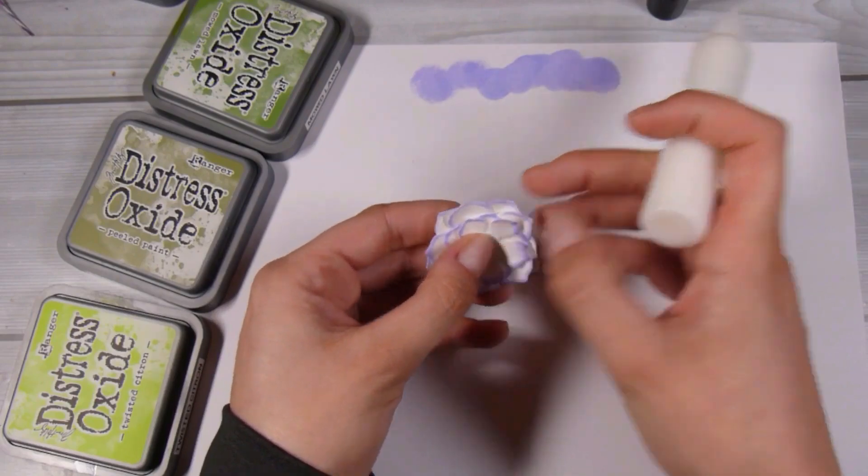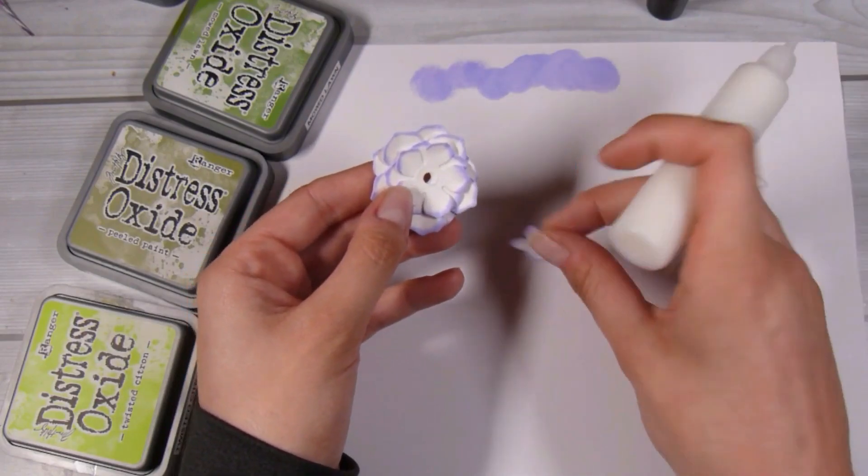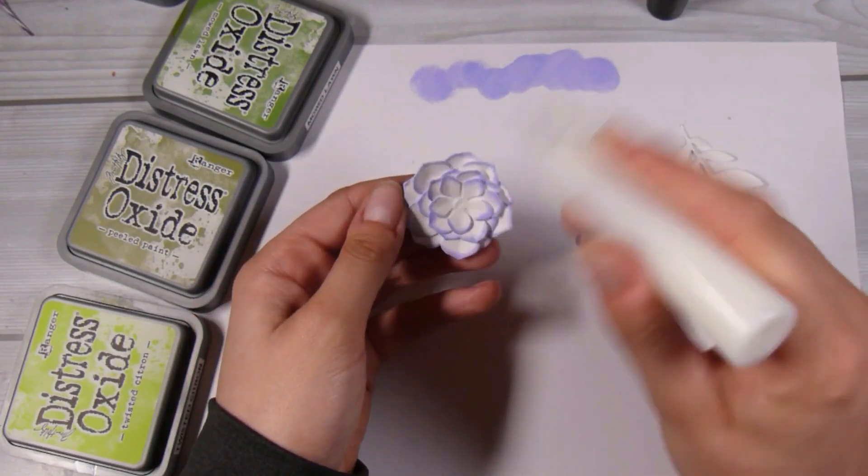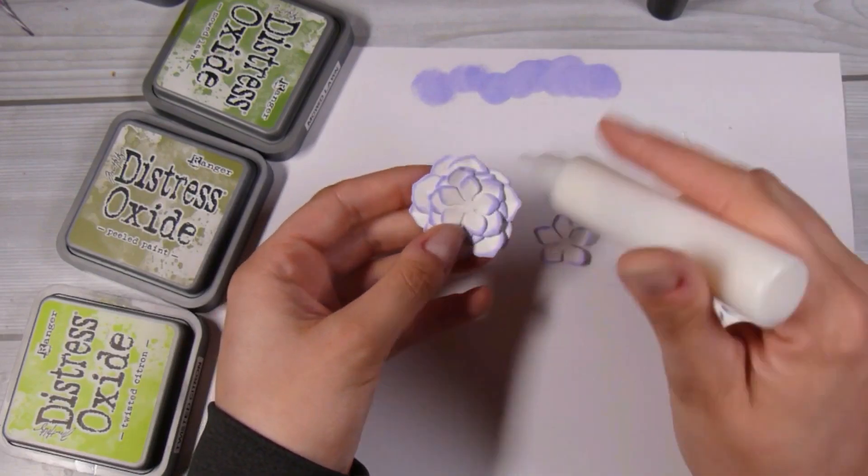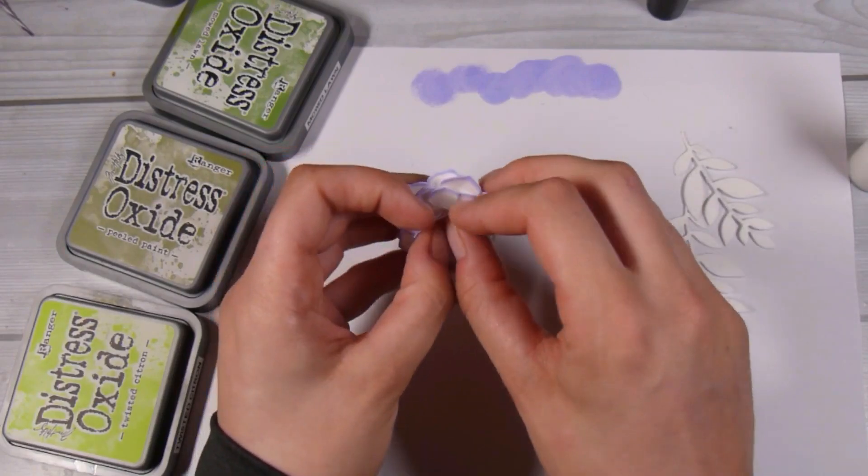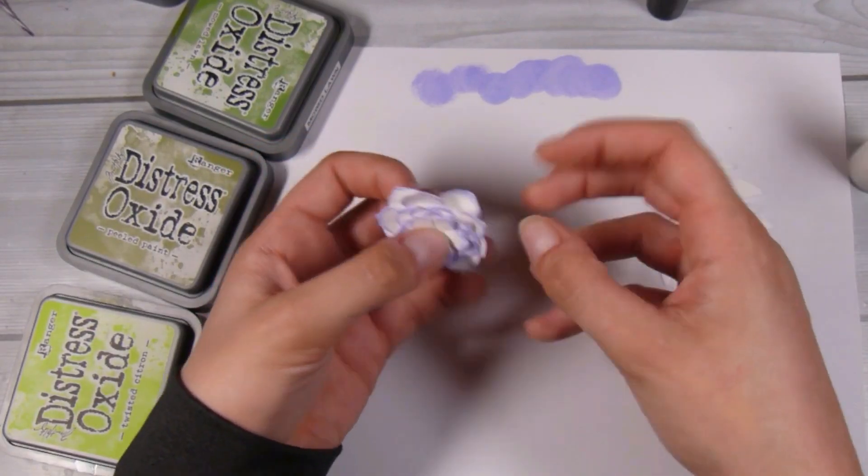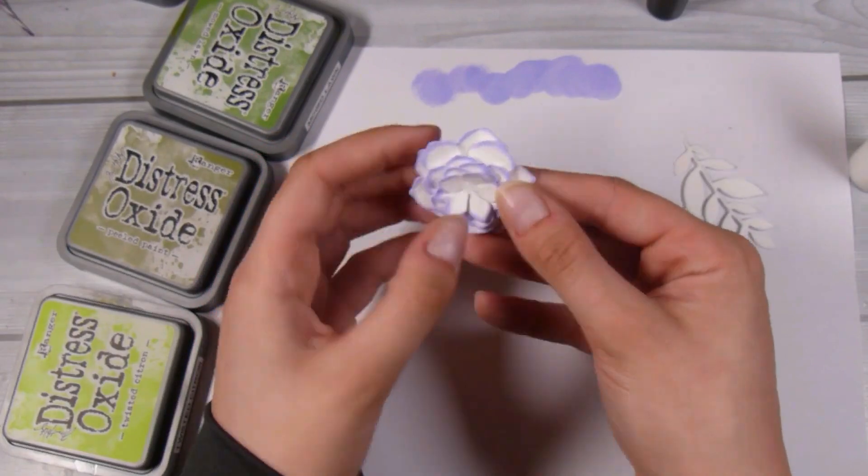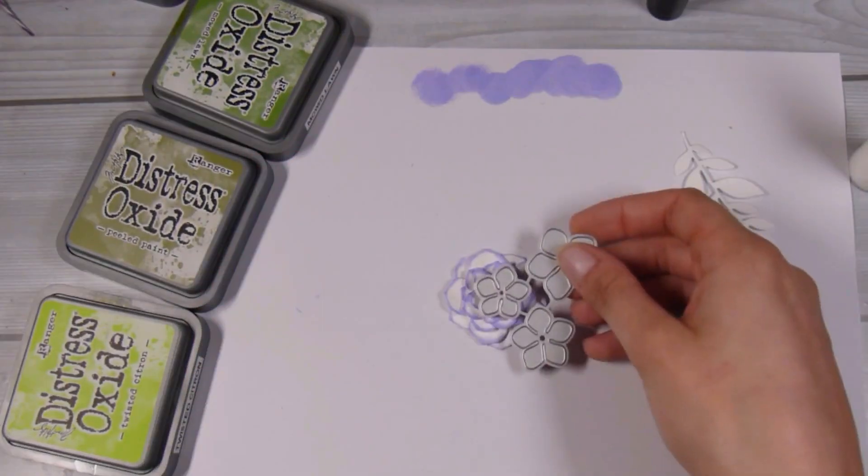I decided to glue it together with some liquid adhesive - this is a glue bottle from AliExpress but the glue inside is the Ranger Multi-Medium in the matte finish. Then I just kind of end up playing with the petals a little bit to make it look how I want it to.